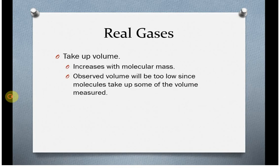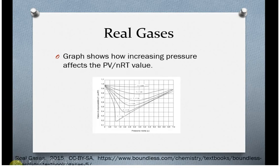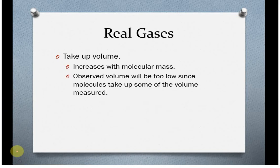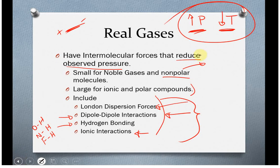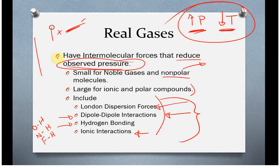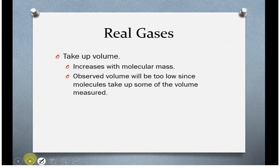Now, what this means is our pressure that we observe is going to be lower than what it should be because these interactions are going to slow down the particles before they hit the walls. In addition, real gases do take up volume. Those particles do take up space inside this flask. And so you can't just discount that.